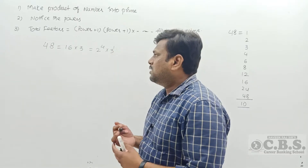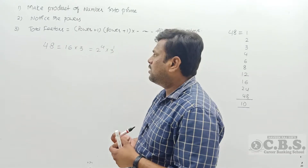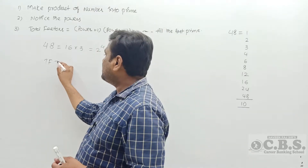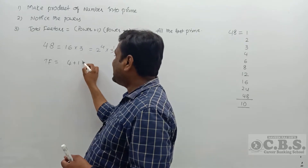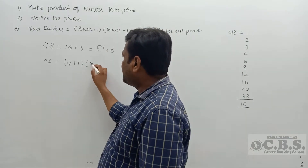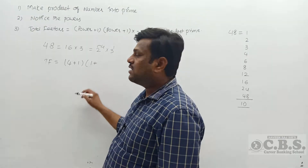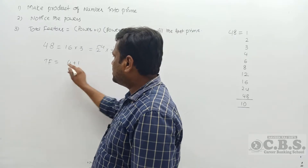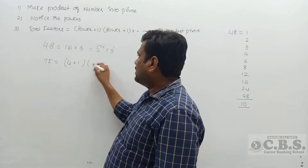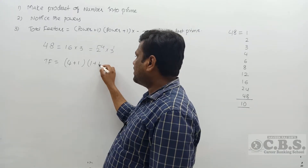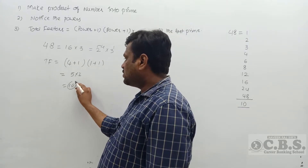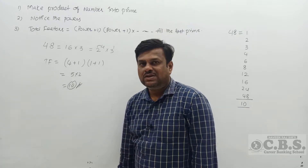So 48 = 2⁴ × 3¹. There are two prime factors: 2 and 3. Total factors: 2 comes 4 times, so (4+1) = 5; and 3 comes 1 time, so (1+1) = 2. Therefore total factors = 5 × 2 = 10. There are 10 total factors of 48.